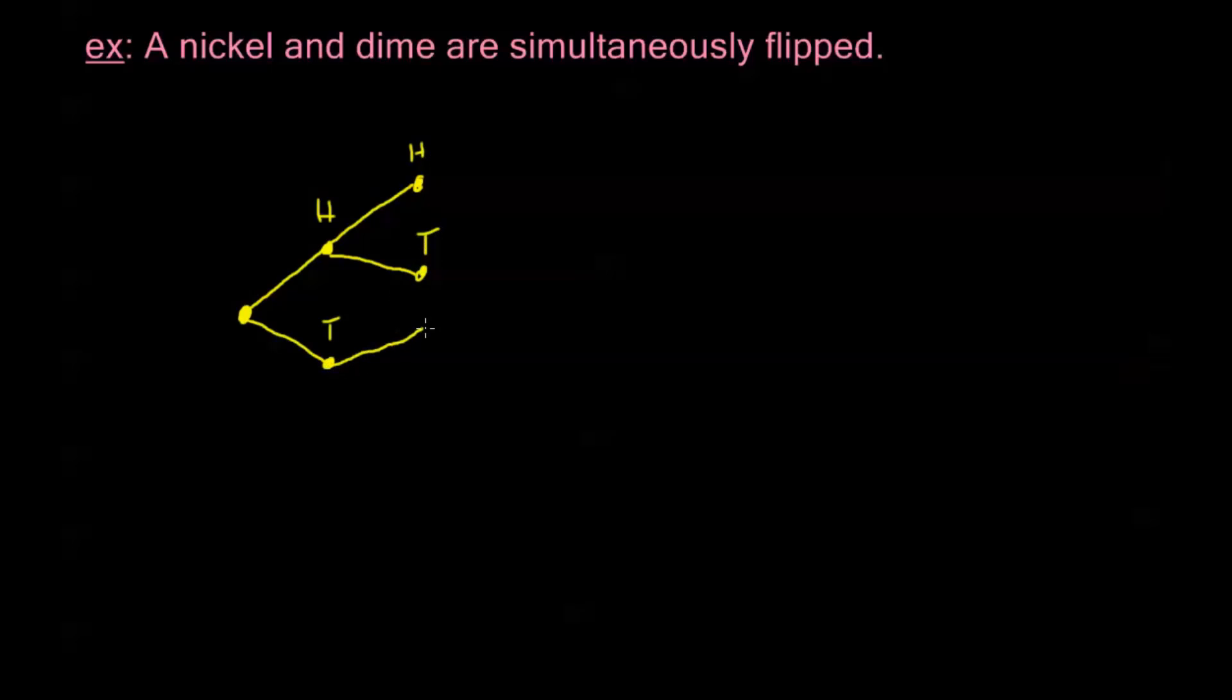And if my nickel was tails, my dime, of course, could still be heads or tails, right? These are independent. So no matter what I flip with my nickel, I can still do all possible flips with my dime. So here, this part of the tree diagram represents my nickel. And this part of the tree diagram represents my dime, okay? And that's it.